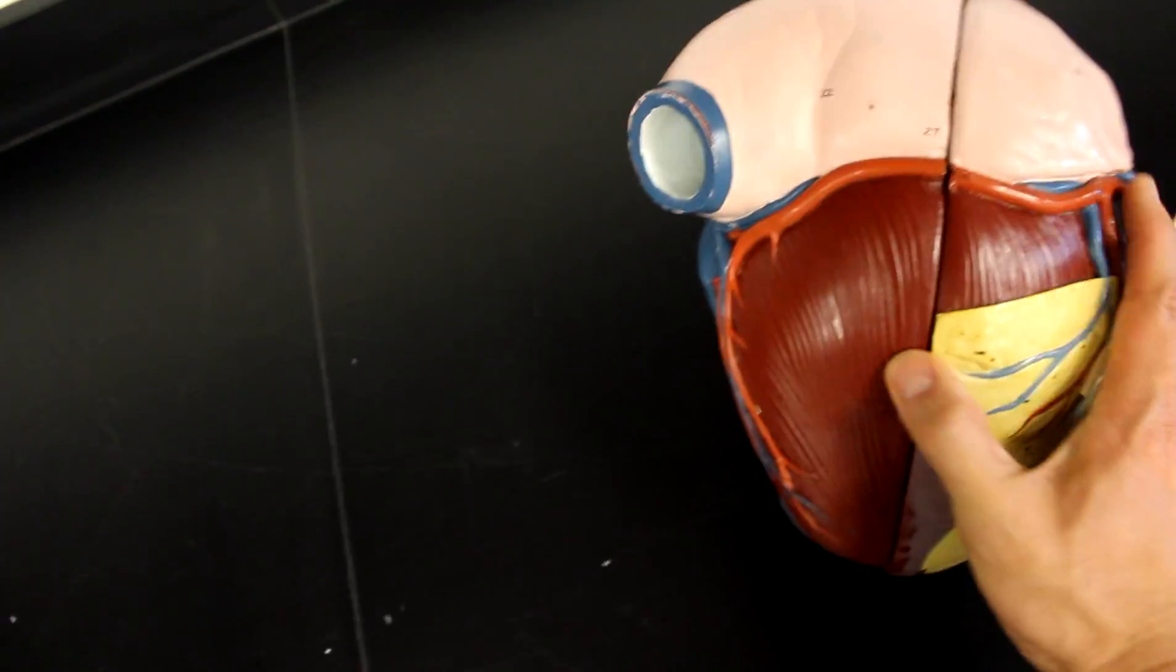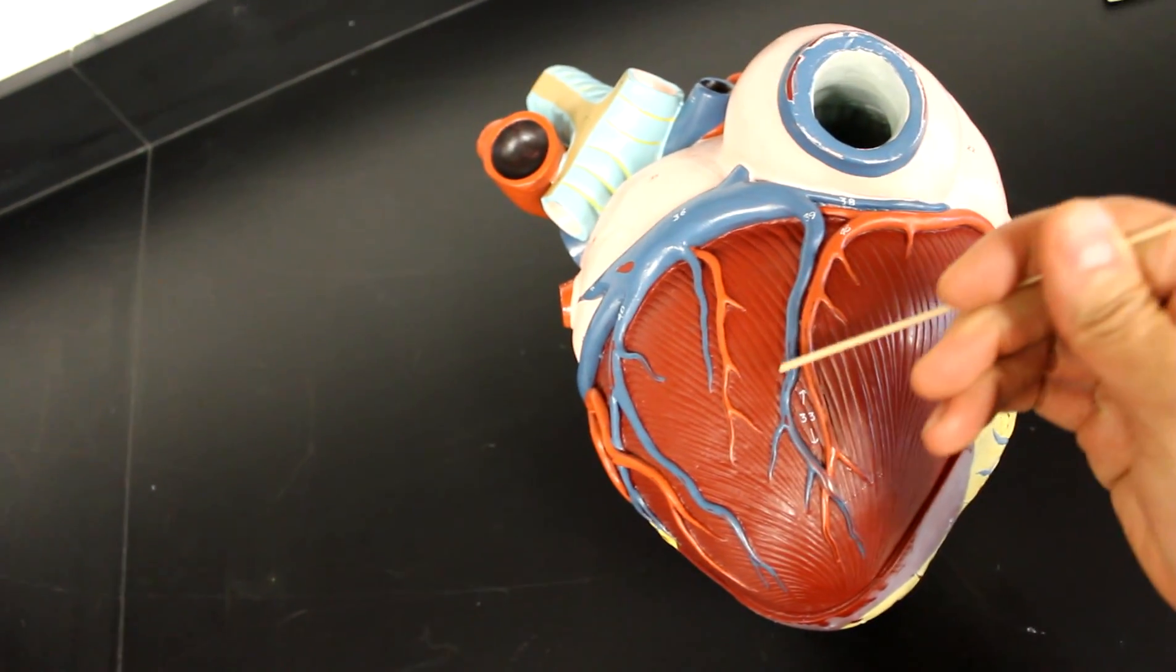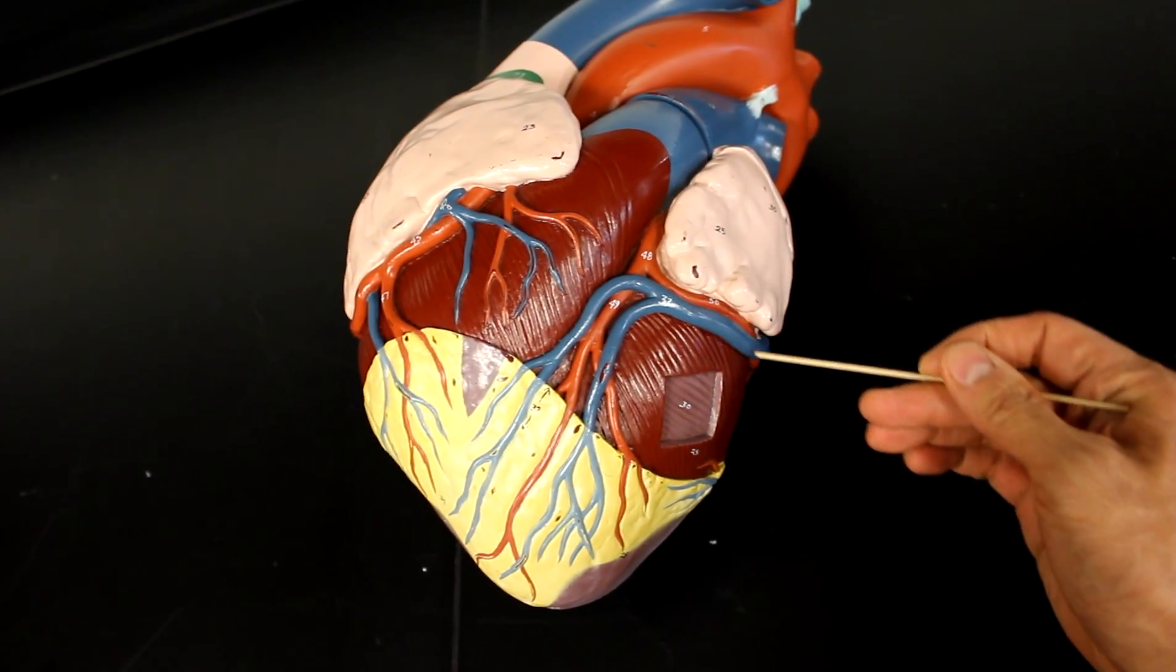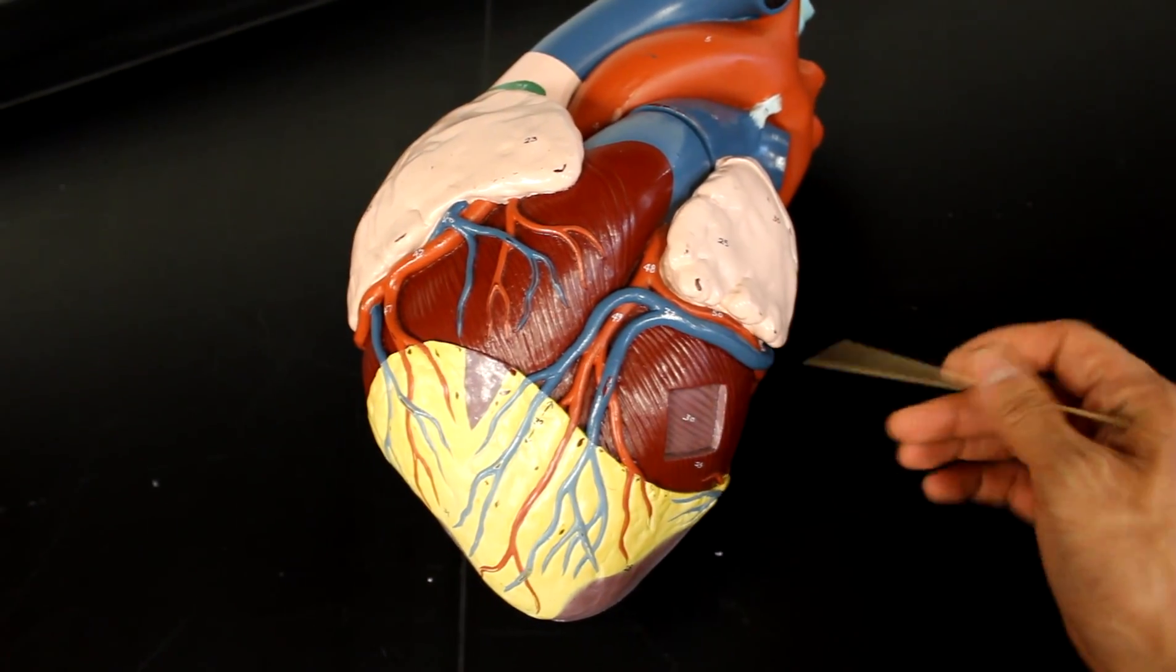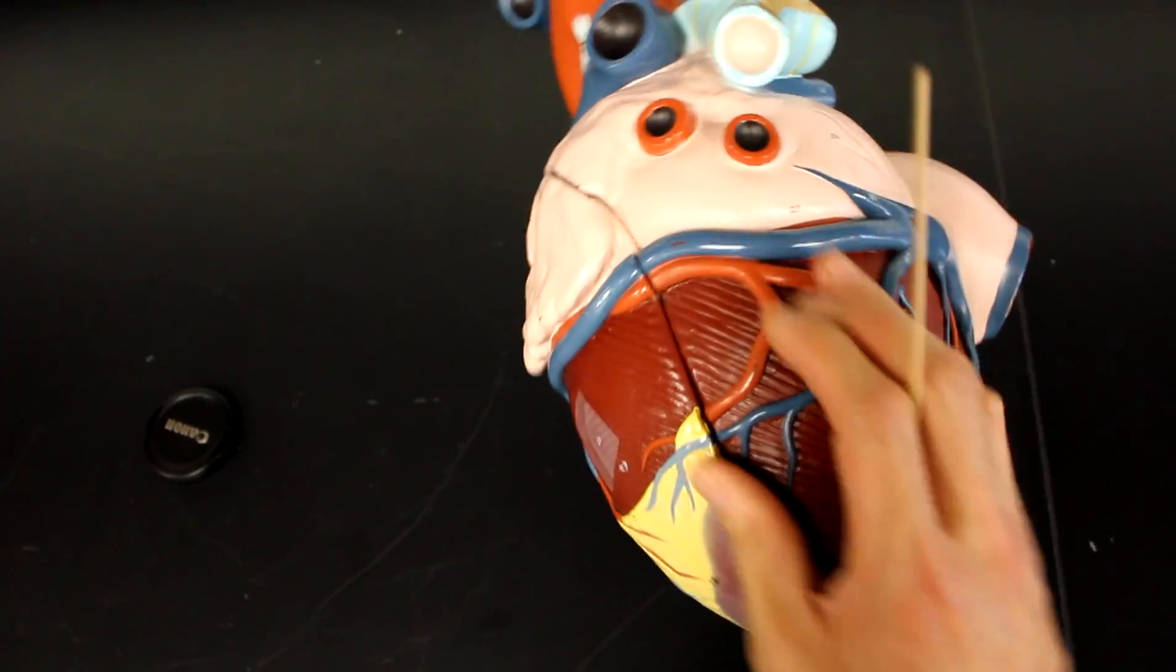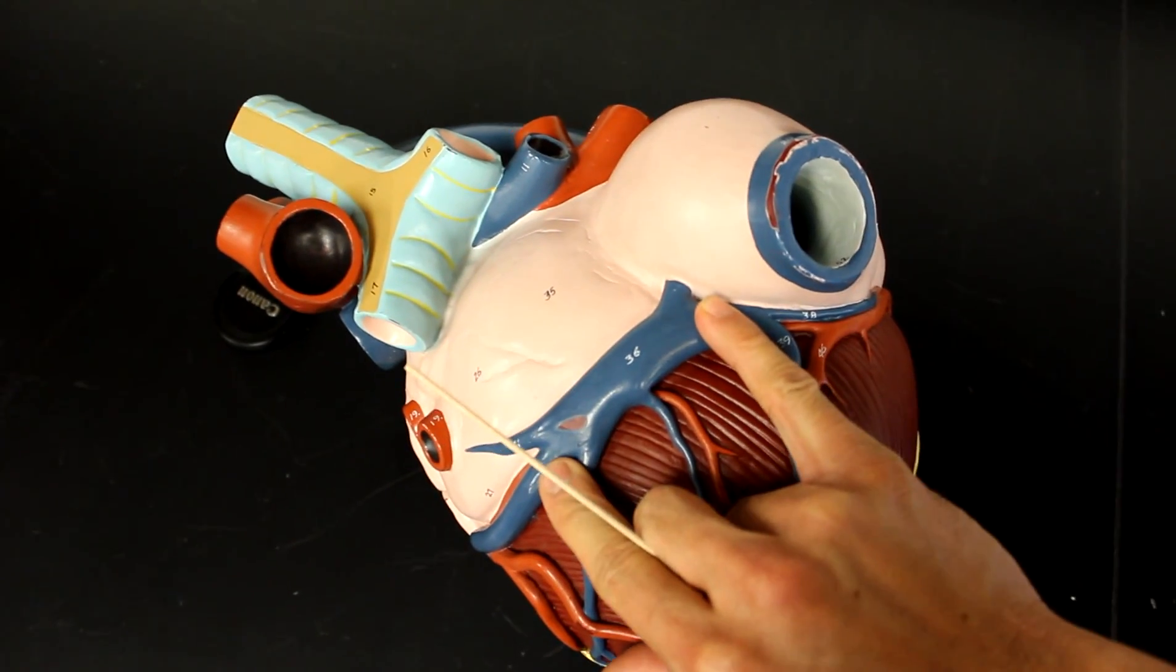The posterior interventricular travels with the middle, so this would be considered the middle cardiac vein. And then the great cardiac vein travels with essentially the extent of the anterior interventricular and the circumflex. So this is all the great cardiac vein as you spin around. All three of them will dump themselves into the very large coronary sinus. As you can see, it's quite large here.